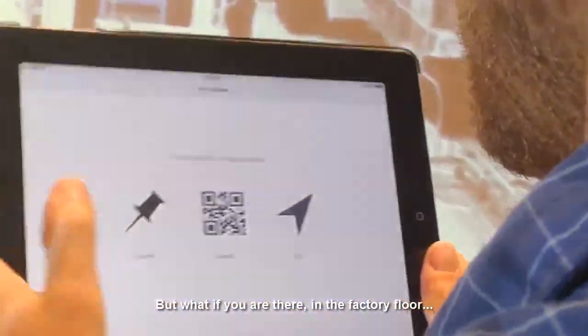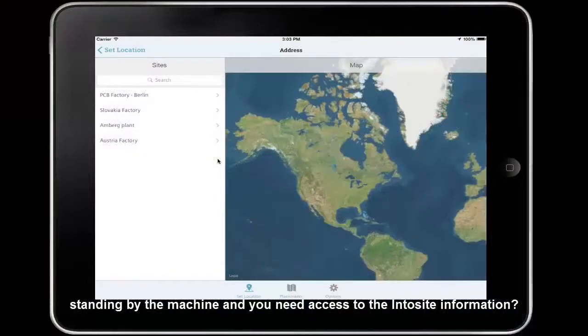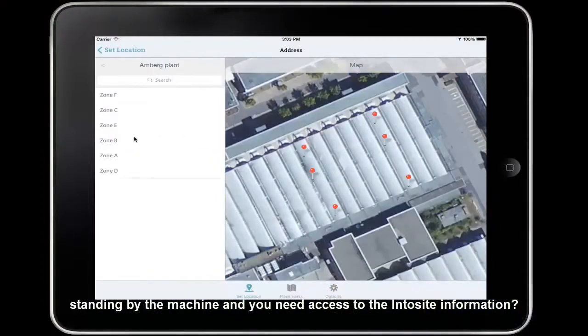But what happens if you are there in the factory floor, standing by a machine, and you need access to the InterSite information?